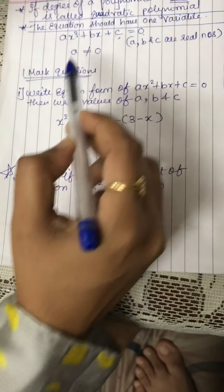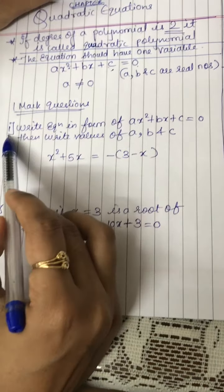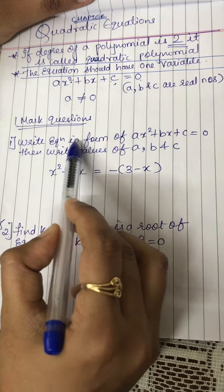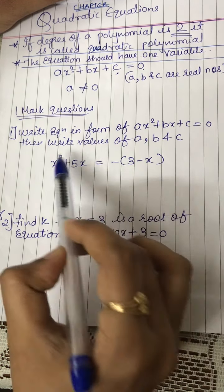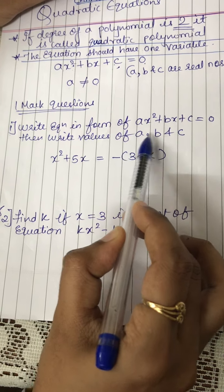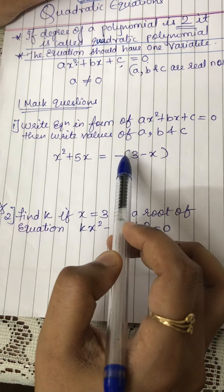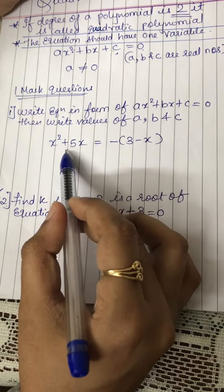Now, I will start with the question, one mark question. Write equations in form of ax square plus bx plus c is equal to 0, and then write the values of a, b and c. This question comes for one mark. Here I have taken question.